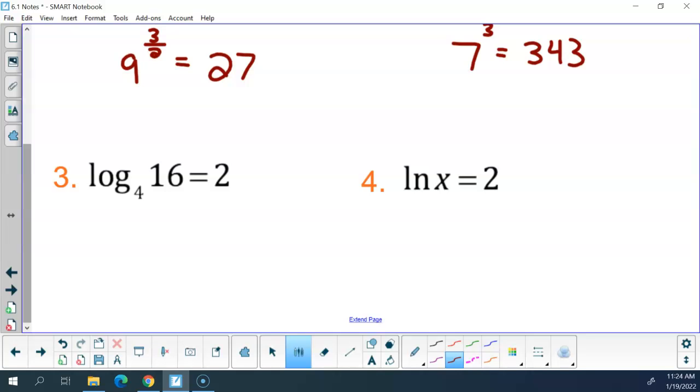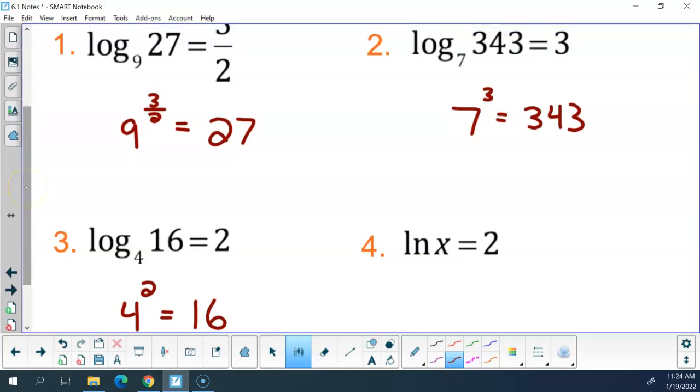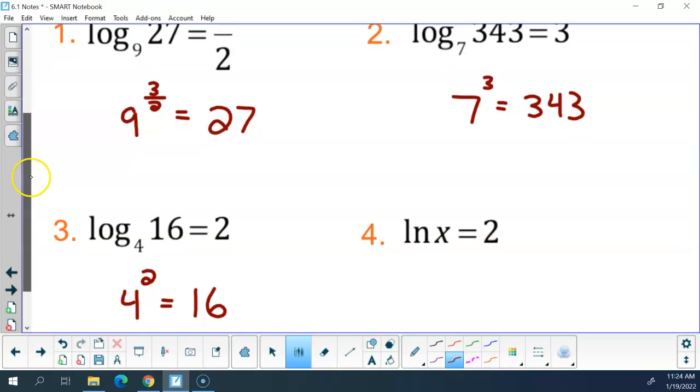You try number two now. Base, exponent, argument. Number three, let's do it together quickly. Base four, exponent two, argument 16. All of those, just so you are aware, and this will come up later, all of those are true statements on all six accounts so far. Nine to the three-half power is 27. Log base nine of 27 is three-halves. Seven cubed is 343. Log base seven of 343 is three. Four squared is 16. Log base four of 16 is two. That will come up later. These are all true statements.